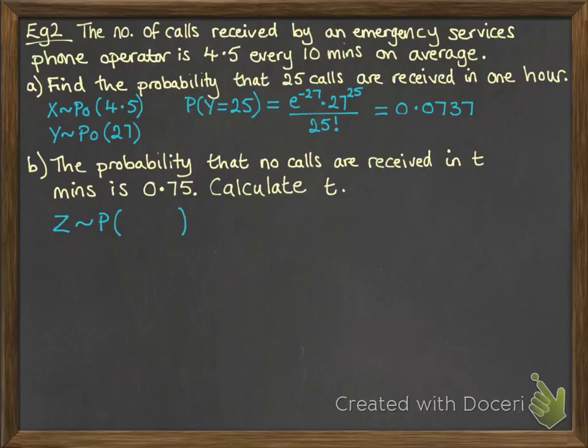So we can actually write that down in terms of t. So 4.5 divided by 10 would be 0.45, and then we would times it by t. So our parameter is 0.45t.